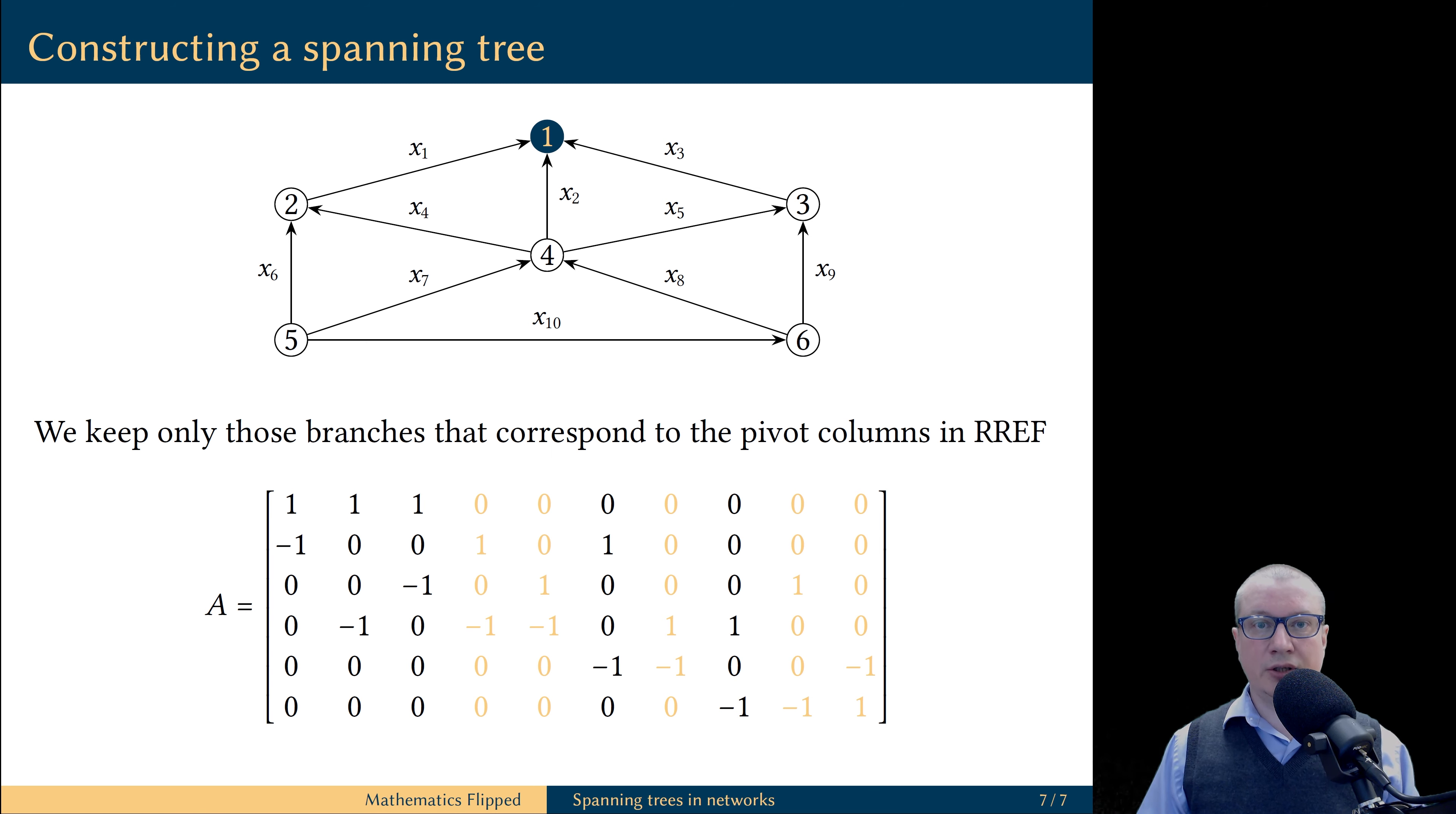Let's apply this computation to our particular network. This computation tells us that the branches 4, 5, 7, 9, and 10 are the ones that contribute elements of the null space of A. In other words, they create loops in the network and we do not need these branches.